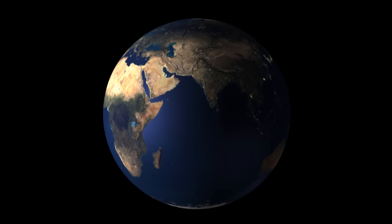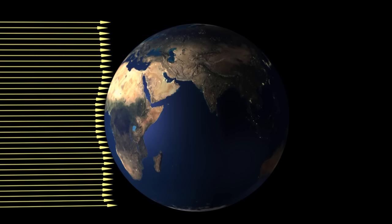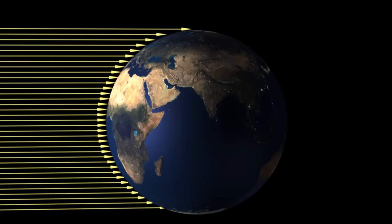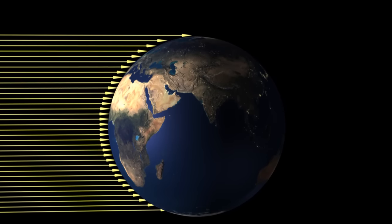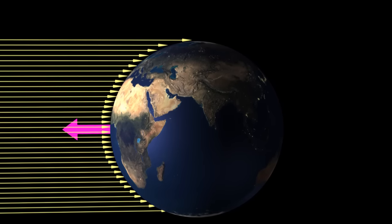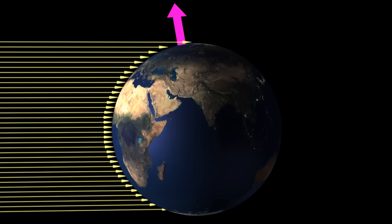It all starts with the sun. That's what's driving the weather. Sunlight hits the globe at different angles. At the equator, it hits the ground head-on. But at the poles, it's coming in at an angle.